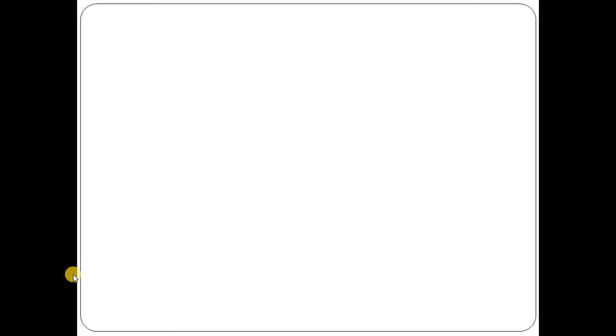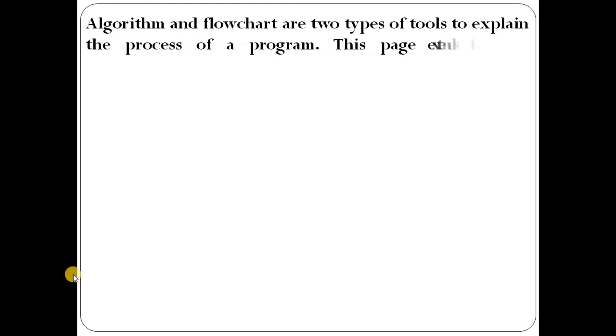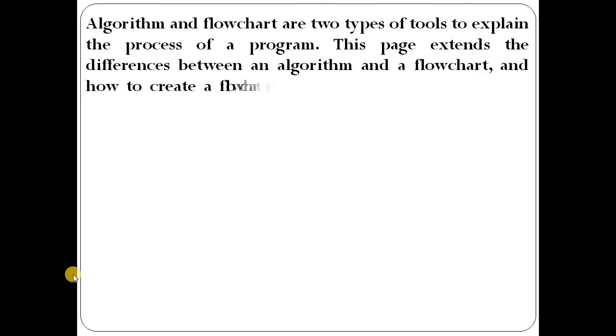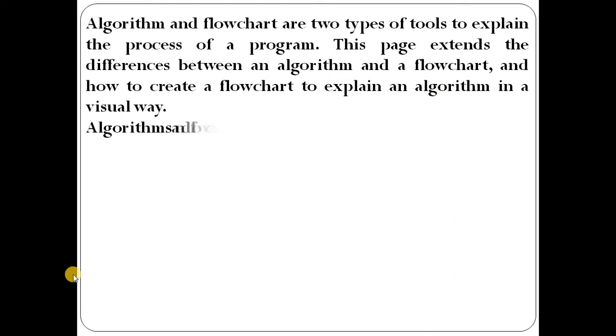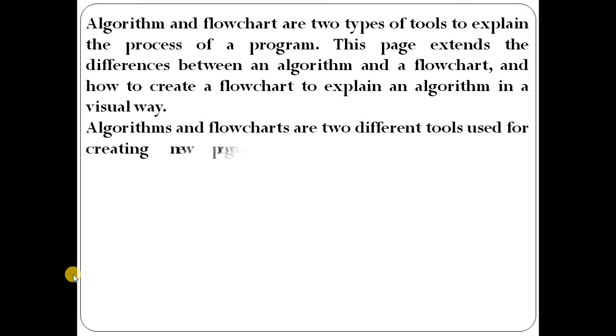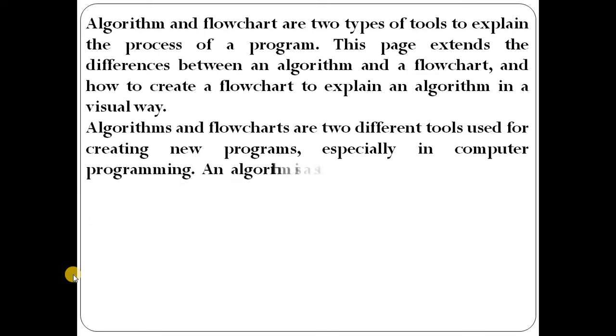First, we are going to explain what an Algorithm and Flowchart are — a short introduction. Algorithm and Flowchart are two types of tools to explain the process of a program. They explain the difference between an algorithm and a flowchart and how to create a flowchart and explain an algorithm in a visual way.